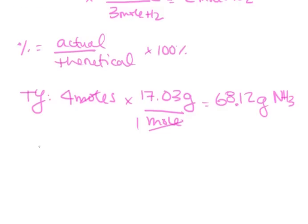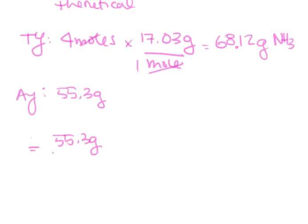And so, our actual yield, we were told that we isolated 55.3 grams. So, now we have our actual and theoretical yield. We can plug this into percent yield. 55.3 grams over 68.12 grams times 100%. This gives you 81% yield as your answer.